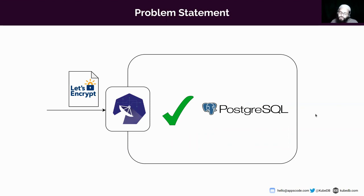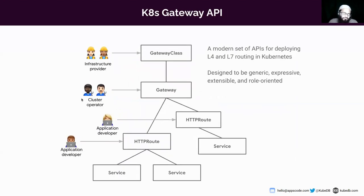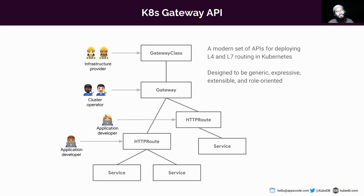To come up with this KubeDB Gateway solution, we built on top of the Kubernetes Gateway API. Kubernetes Gateway API is an open source project managed by the SIG Network community, and it's a collection of resources that model service networking in Kubernetes. With Gateway API, we can manage ingress traffic in a more extensible and role-oriented manner.